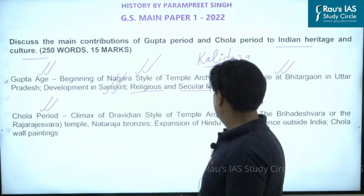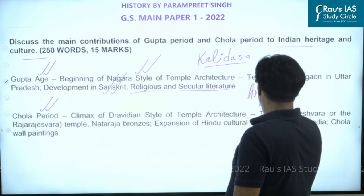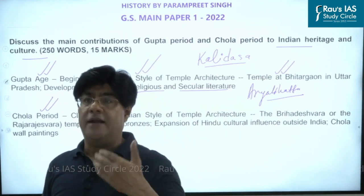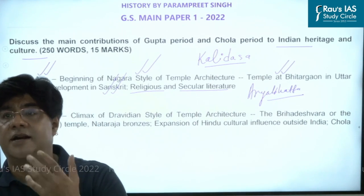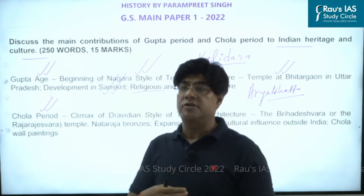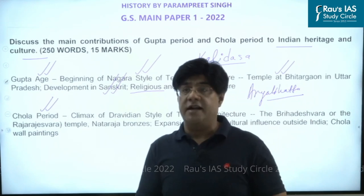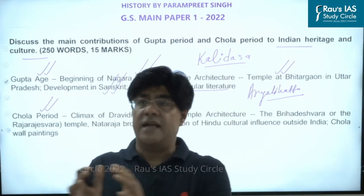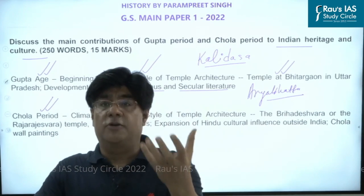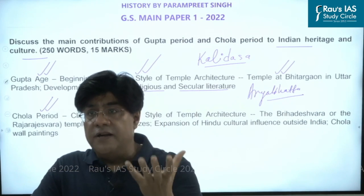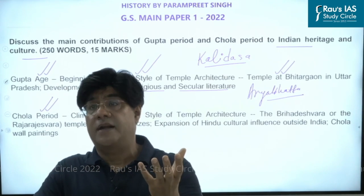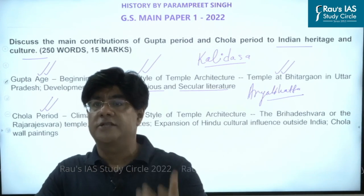Another example is Aryabhata, another great scholar of the Gupta period. Unlike Kalidas who was a poet, Aryabhata can be considered a mathematician. He wrote a text called the Aryabhatiya, in which we find information very much related to present-day mathematics and astronomy. So during the Gupta period, there was rich development in literature, language, and temple architecture — that is the contribution of the Guptas to Indian heritage and culture.